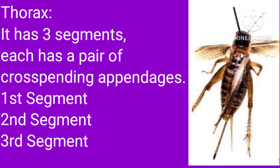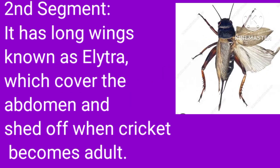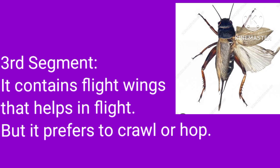The thorax has three segments, each with a pair of corresponding appendages. The first segment forms a small shell called the carapace. The second segment has long wings known as elytra, which cover the abdomen and spread when the cricket becomes adult. The third segment contains flight wings that help in flight, though the cricket prefers to crawl or hop.